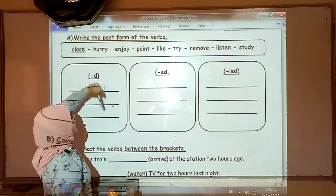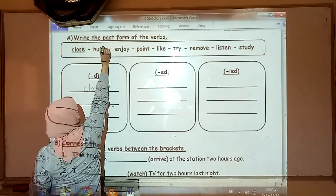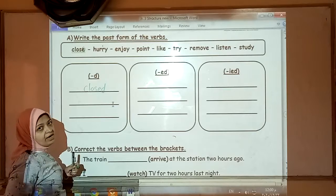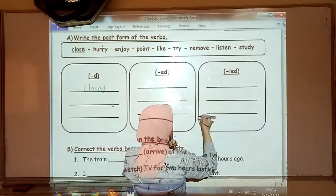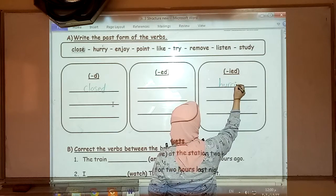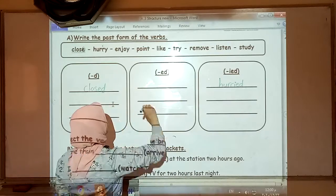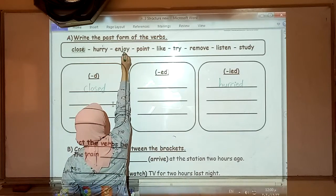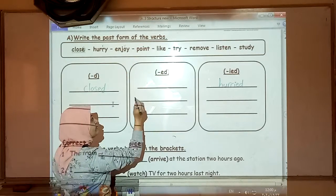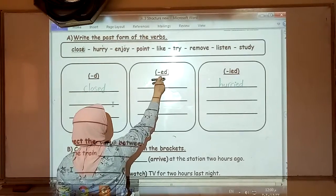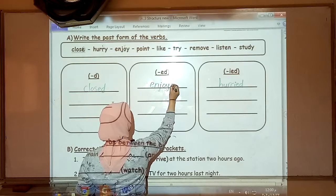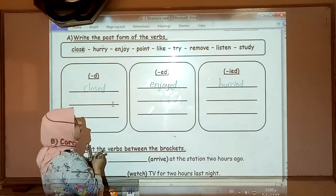Next, hurry. It ends in Y and before it, a consonant letter. So we must cross the Y and put IED. That's correct. So it will be hurried. Next, enjoy. This is a vowel before the Y. What shall we do? Yes, add ED. Leave the vowel and add ED. Enjoyed.